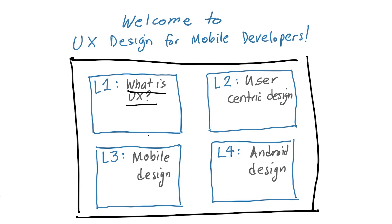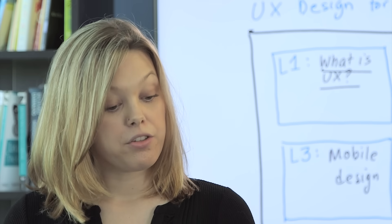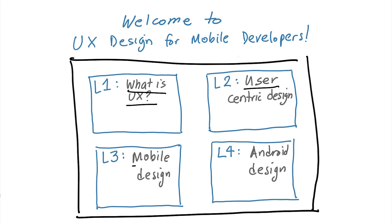The second lesson is about how to create applications for specific users, and we're going to use tools called personas and use cases. The third lesson is about mobile design constraints, because after all, this course is for mobile developers.